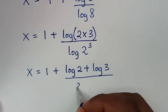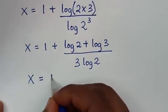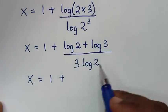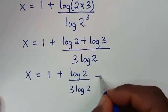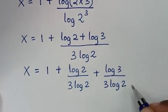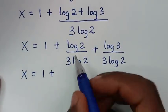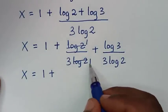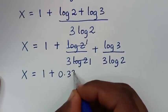This power of 3 will move to the base, so log of 8 becomes 3 times log of 2. Then we divide log of 2 over 3 log of 2 and log of 3 over 3 log of 2. Log of 2 divided by log of 2 cancels, giving 1 over 3. So x is equal to 1 plus 1 over 3, and 1 over 3 in decimals is 0.3333.